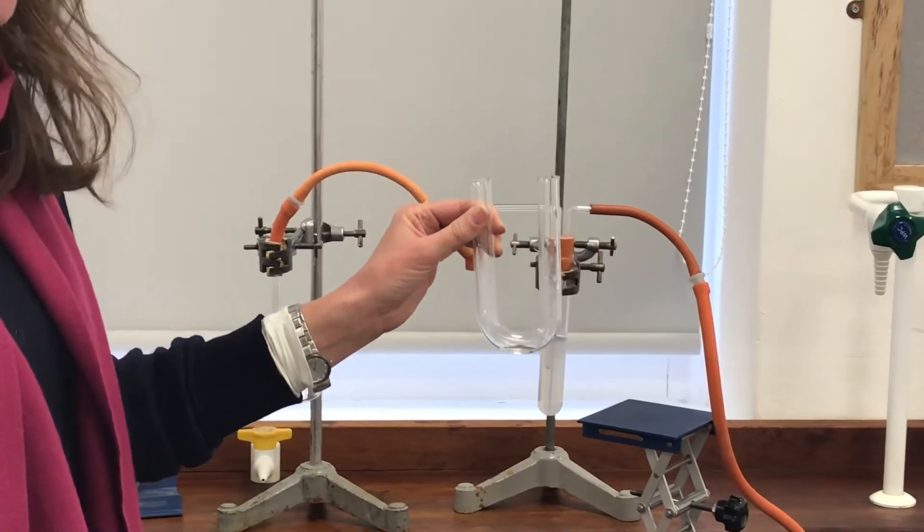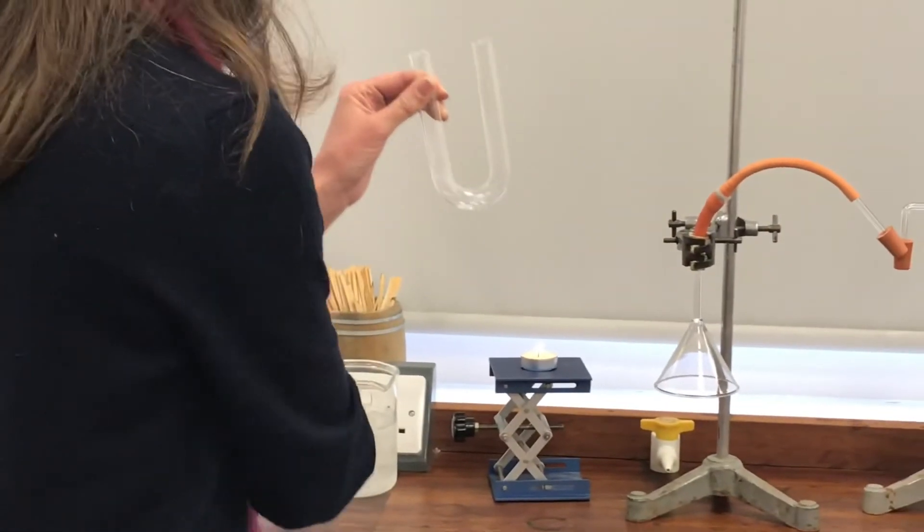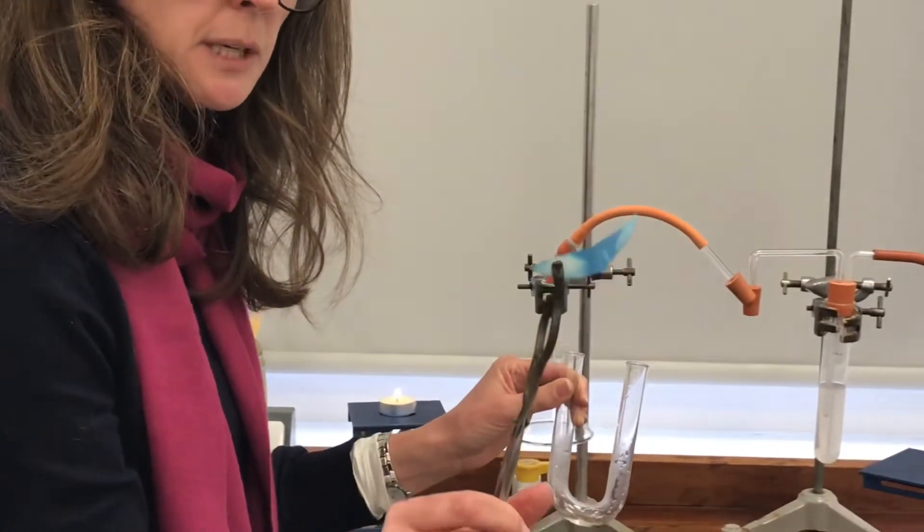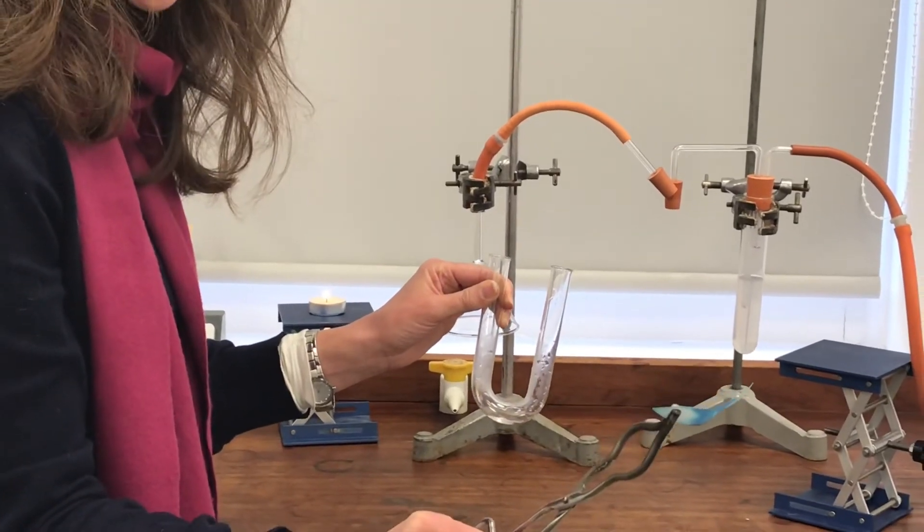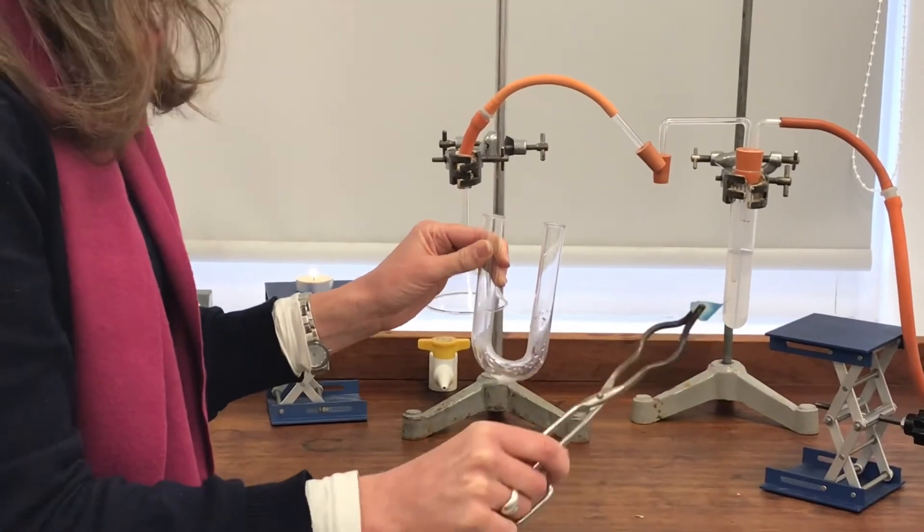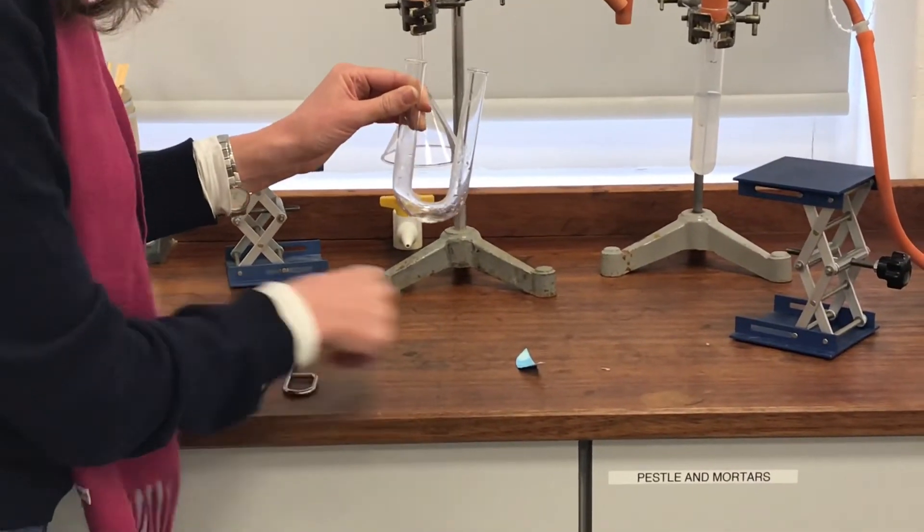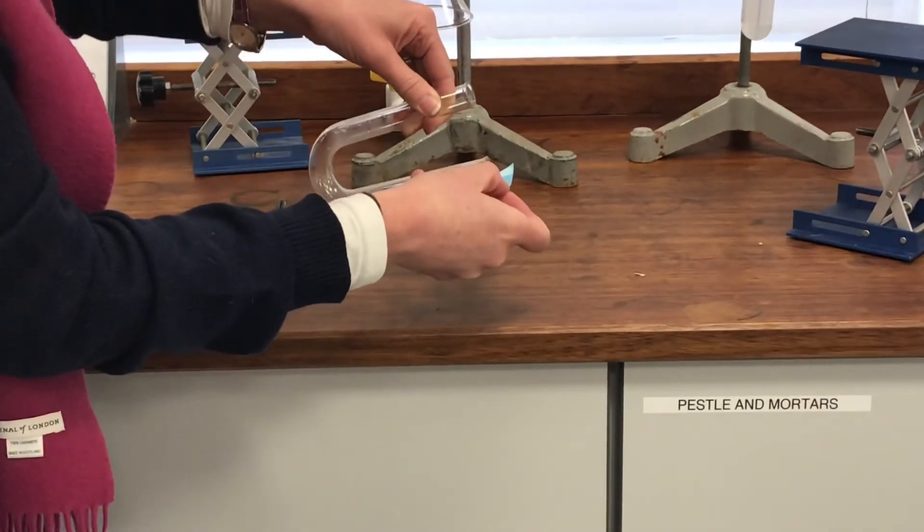I'm going to use something called cobalt chloride paper. Now I've got a little bit here. I'll just get it ready. You can see my cobalt chloride paper is blue. Now when cobalt chloride paper comes into contact with water, it goes pink. So I'm going to remove some of the water from this U-tube here and put it onto my cobalt chloride paper and see if I can pour it very gently and carefully.